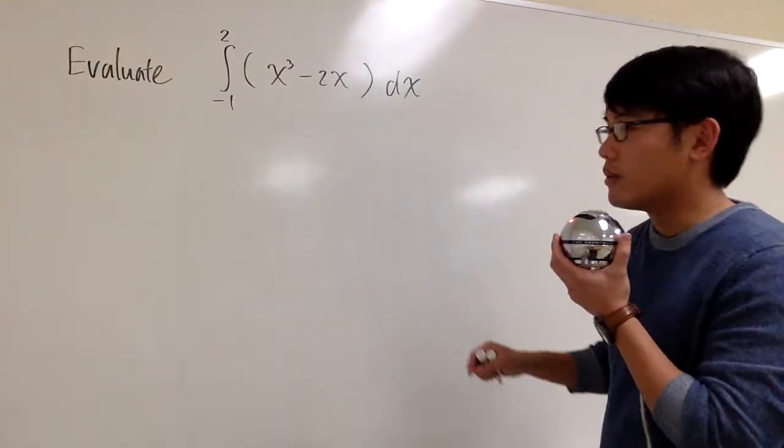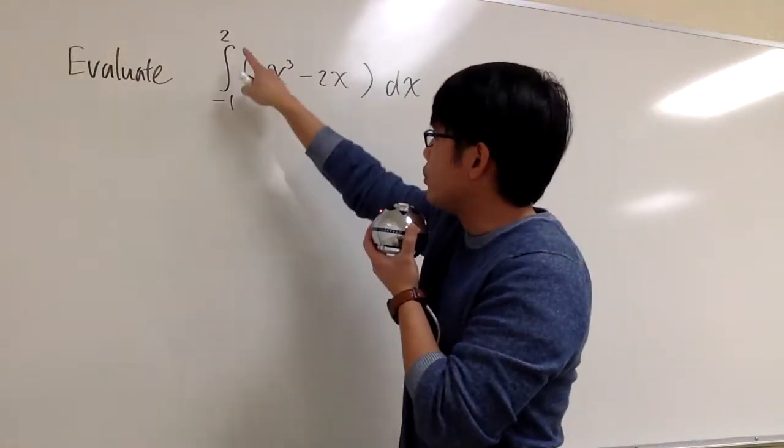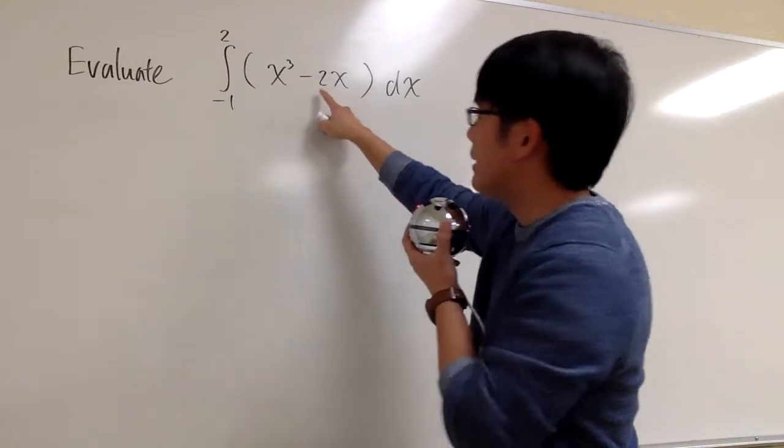Okay, we are going to evaluate this integral. This is the integral from negative 1 to 2, x to the third power, minus 2x, dx.